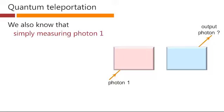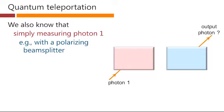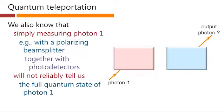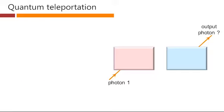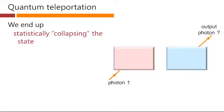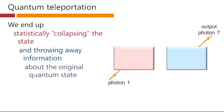We also know that simply measuring photon one, for example with a polarizing beam splitter together with photodetectors, will not reliably tell us the full quantum state of photon one. We end up statistically collapsing the state and throwing away quantum information about the original quantum state of the photon.